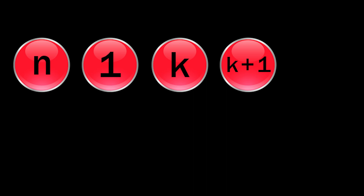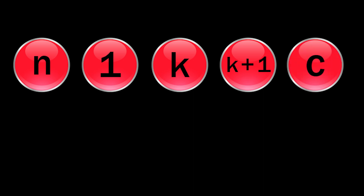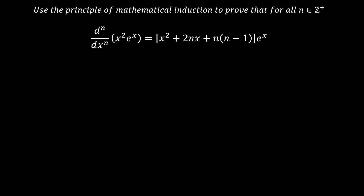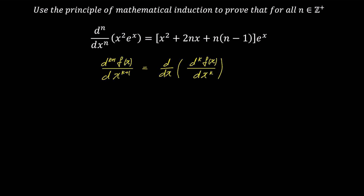The k step represents when the kth term is true, then the k plus 1 step is for verifying if the next term P sub k plus 1 is true. And finally, the step of writing the conclusion is denoted as c. When using mathematical induction to prove derivative problems, there is a key property needed: the k plus 1 derivative of f(x) is equivalent to taking the kth derivative of f(x) and then differentiating it with respect to x once again.